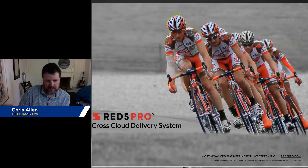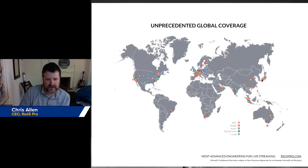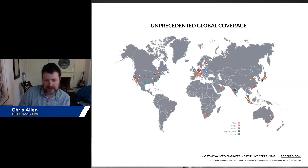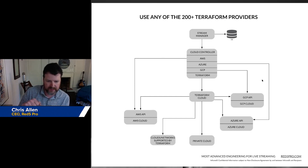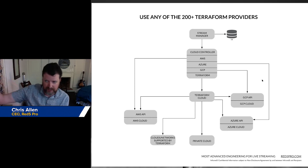Probably more interesting is that we can actually leverage multiple cloud systems to get really nice global coverage. If one cloud provider is not going to cover the regions you're looking to hit, then you can mix and match them. We do this using Terraform, which is a general API that allows you to tap into just about any cloud network — including private networks. So you can have your private cloud connecting to a public cloud for extra capacity and everything else.